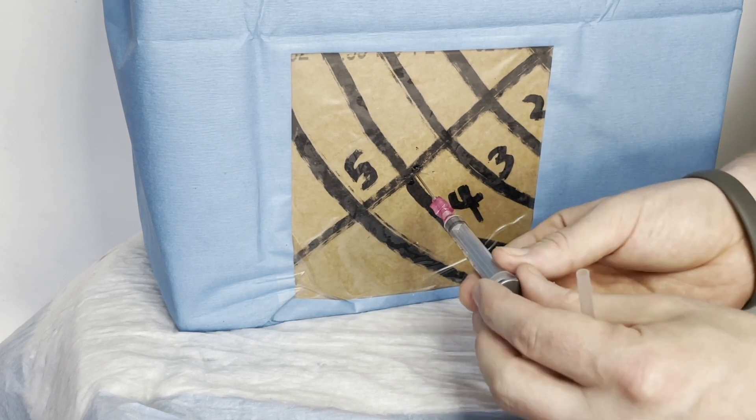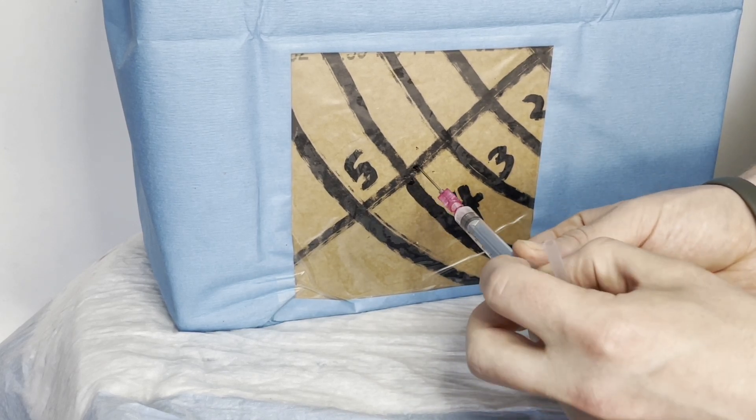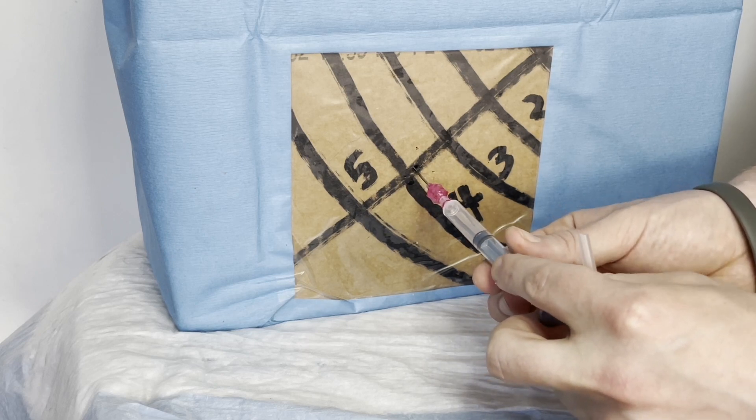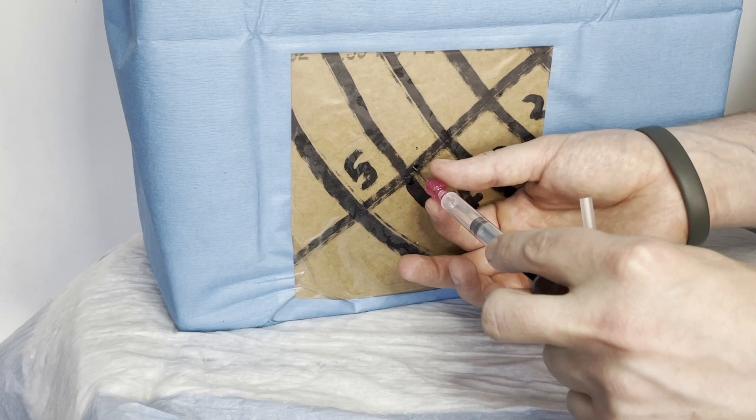And we're going to introduce our introducer needle at a 90 degree angle into the skin. And we're slowly going to aspirate. We've already numbed the area, and as soon as we get to the pleural space, we'll be able to aspirate air back.